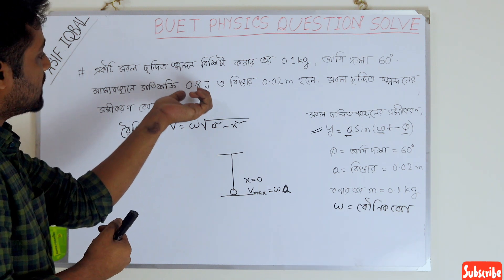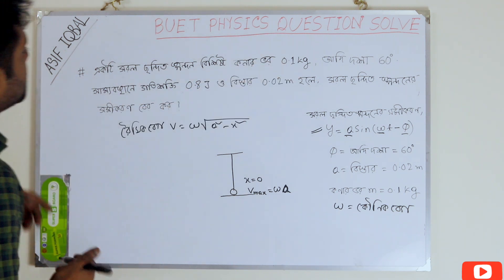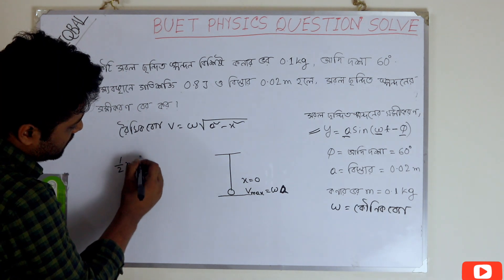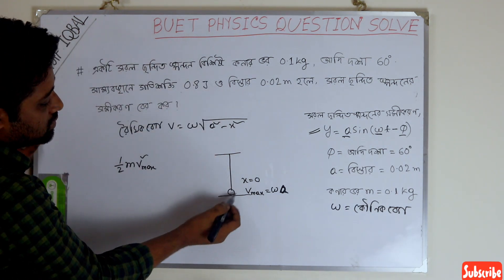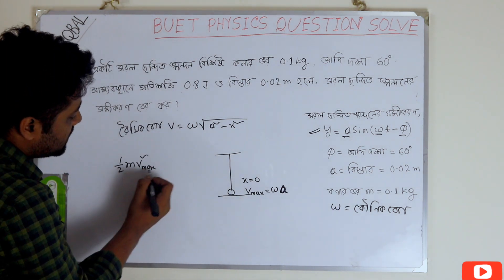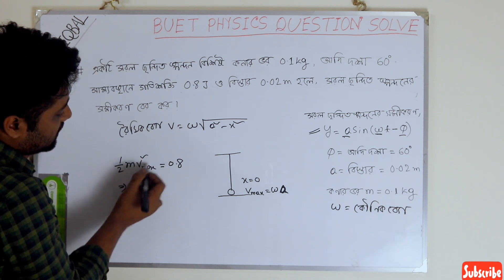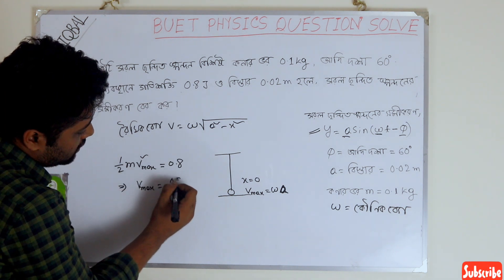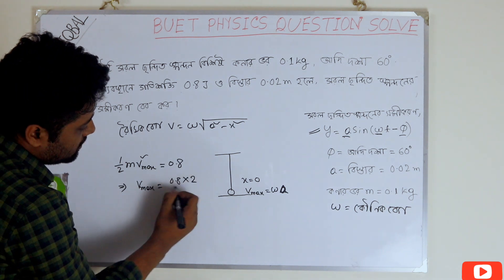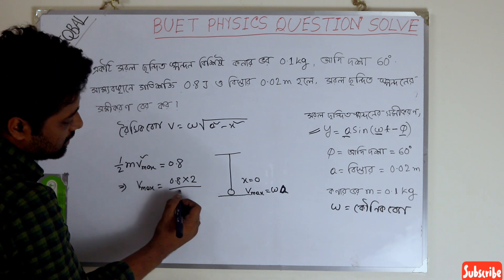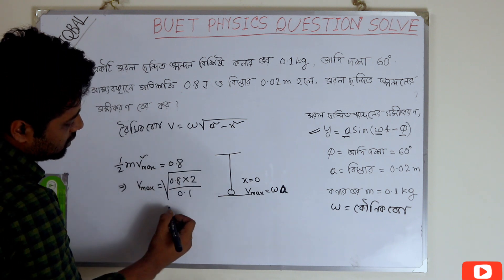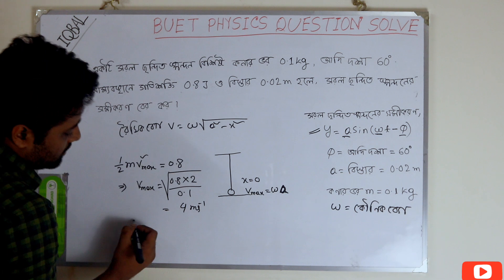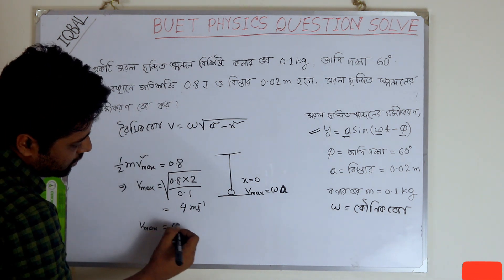The energy given is 0.8 joules. Using the formula, the kinetic energy should be equal to half m v squared, giving us 1.2 m squared. Dividing through: 0.1 m divided by 0.8 gives us the relation. So we know that v maximum is equal to omega into A.